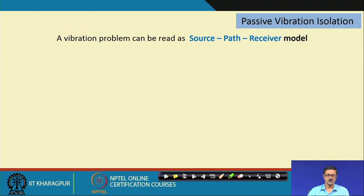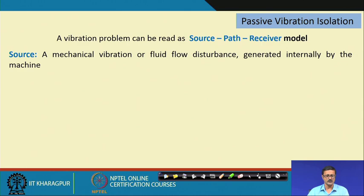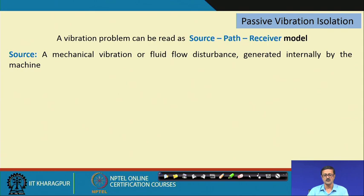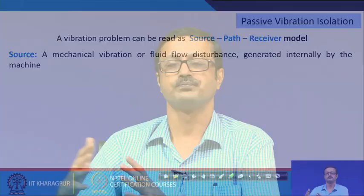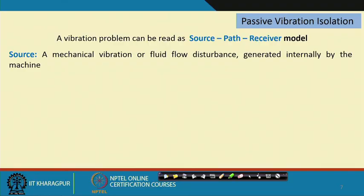In the source-path-receiver framework, all three areas can be controlled. The source of structural vibration is mechanical vibration or fluid flow disturbance generated in machines. For pipelines carrying water or wastewater, laminar flow produces much less vibration and is easier to control, whereas turbulent flow produces more vibration requiring greater effort to control.